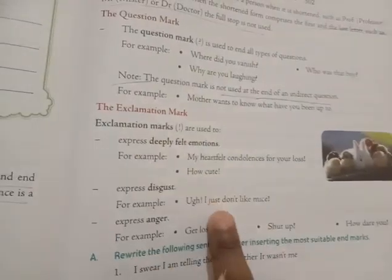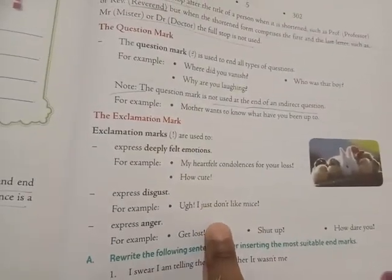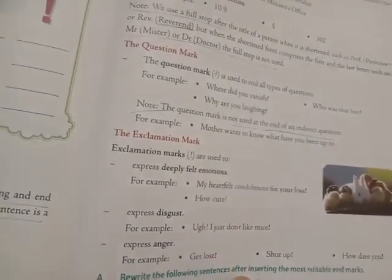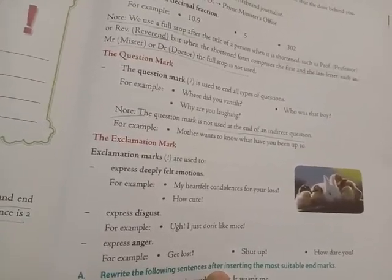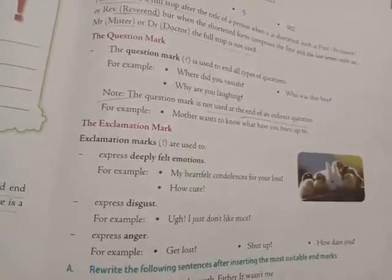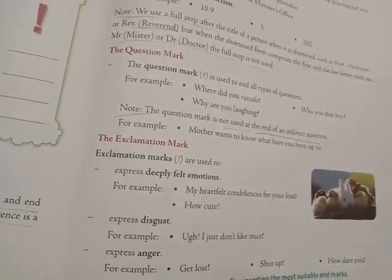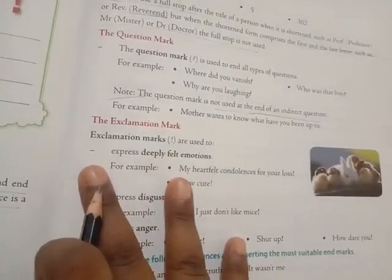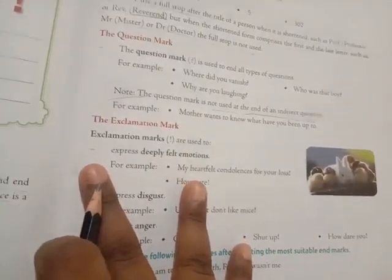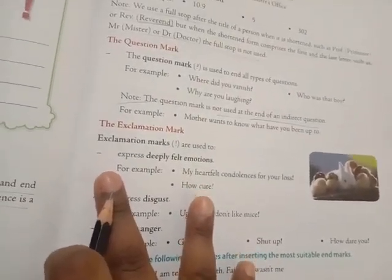Our next punctuation mark is the exclamation mark. I can say, 'Wow, what a beautiful picture!' Or I can say, 'Alas, we have lost the match.' You can hear my voice and how I am speaking. I am expressing my emotions. Exclamation marks are used for showing emotions and feelings.